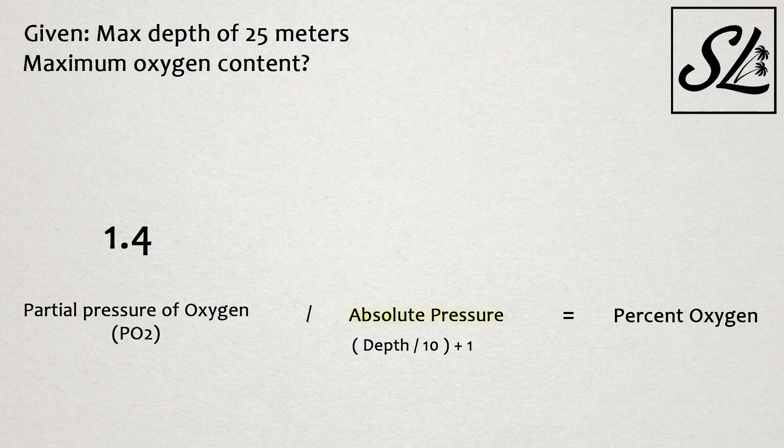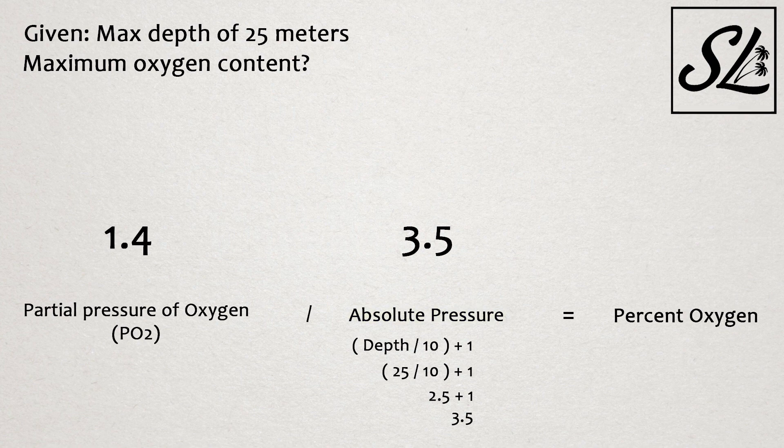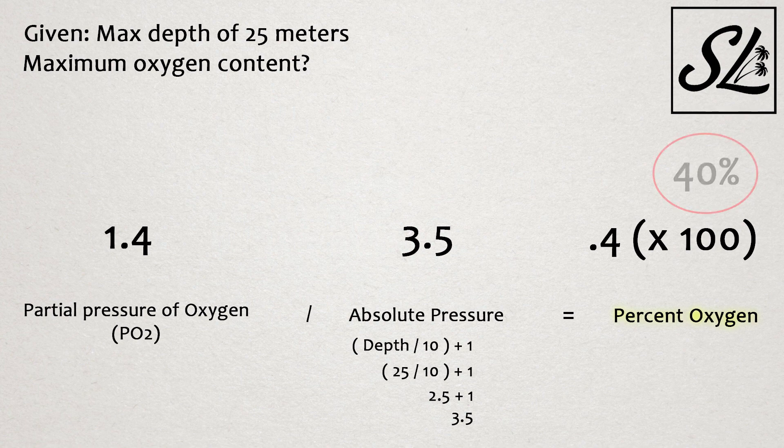So for a depth of 25 meters, we would use 25 divided by 10 plus 1, which will give us an absolute pressure of 3.5 atm. After dividing this out, we will be given an answer of 0.4, which we will then multiply by 100 to get our percent oxygen 40%.